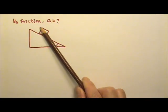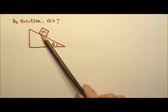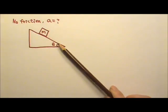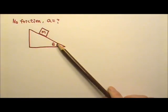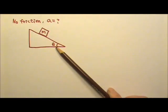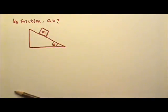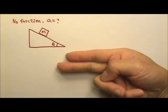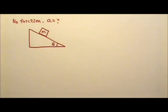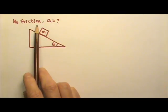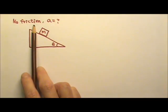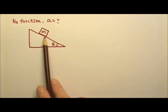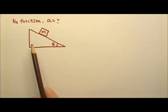Let's say we have a box with mass M on an incline. For an inclined plane, we use the angle here as the angle of the incline. So when the angle is zero, it is a horizontal plane. We will start with a frictionless incline, and we will find the acceleration of the box and every force that acts on the box.